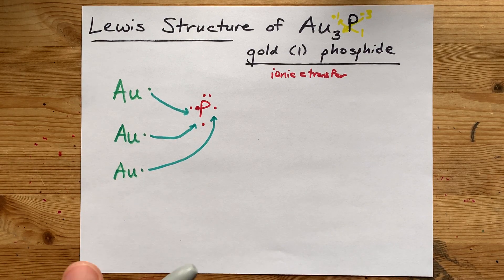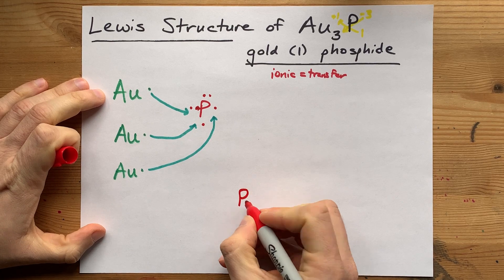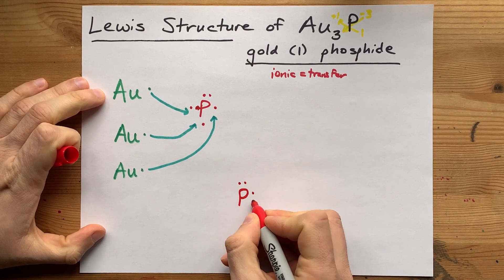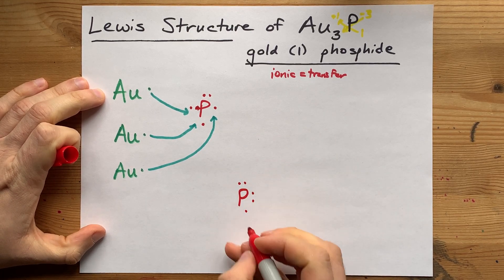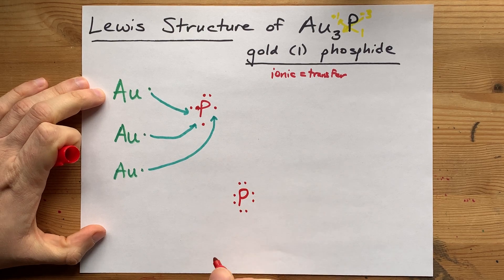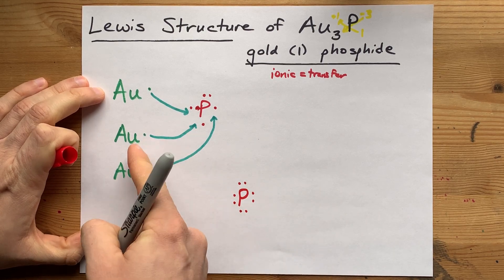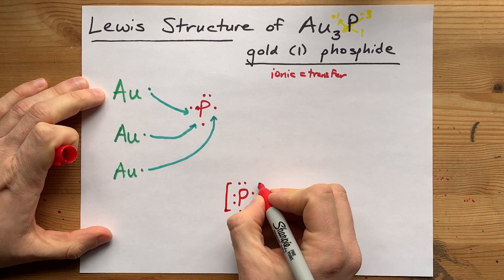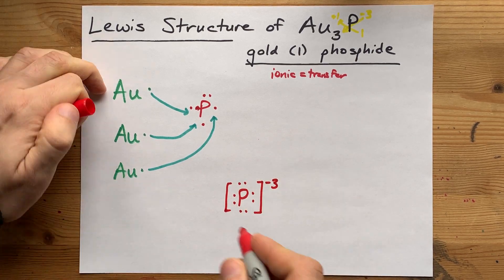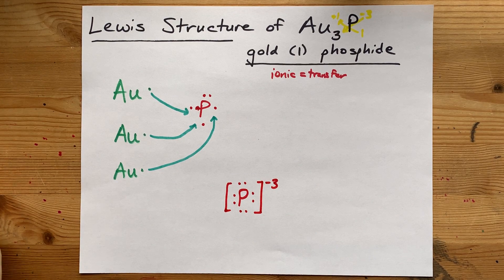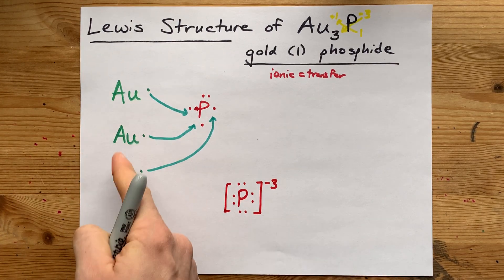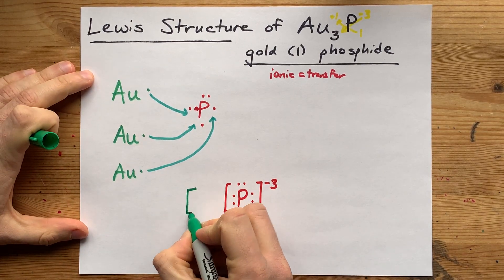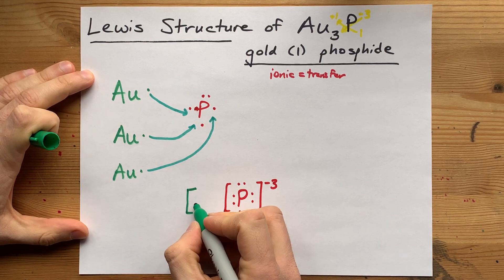The result is that you have a phosphorus atom with 1, 2, 3, 4, 5, plus 1, 2, 3 extra electrons, one from each of the golds. And it now has a charge of minus 3. That's 3 extra electrons compared to when it started. You have 3 gold atoms, and they brought 1 electron each, but gave it away.